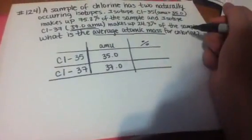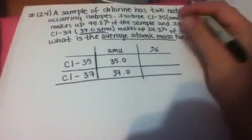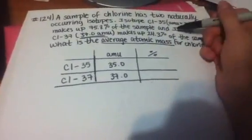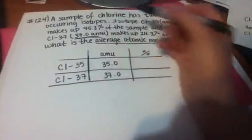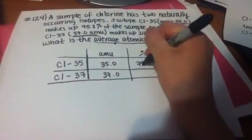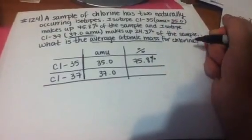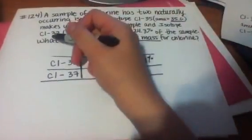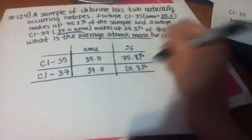And now I'm going to write what percentage of the sample it makes up. And they also give us this in the problem. So here, it tells us Cl-35 makes up 75.8%, and isotope Cl-37 makes up 24.3%.